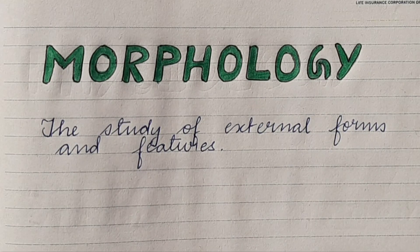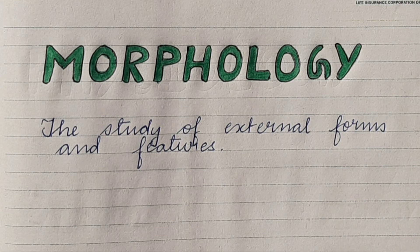Now we have morphology. Morphology is the study of external forms and features — note the key focus: external forms and features. For example, incisors are somewhat chisel-shaped, while canines are sharp and pointy. That is the morphology of teeth — the study of external forms and features.